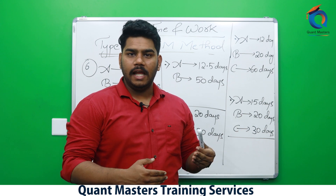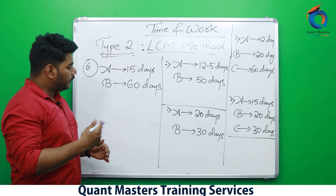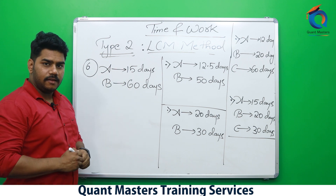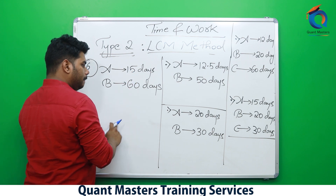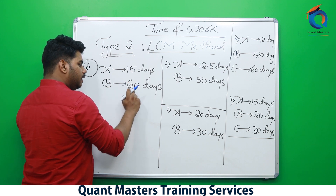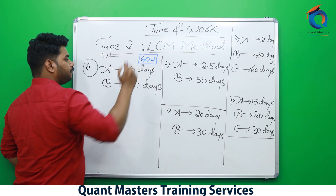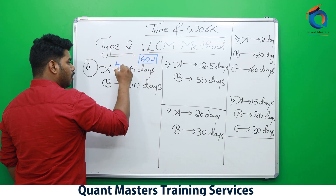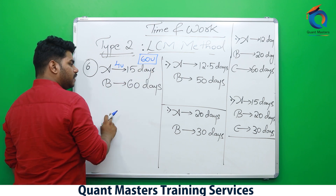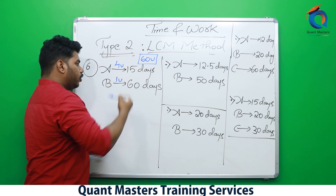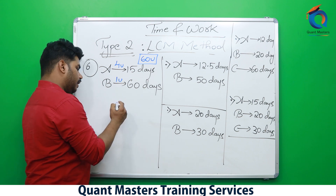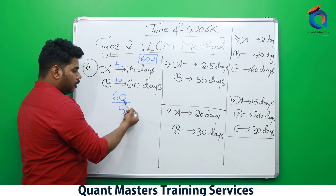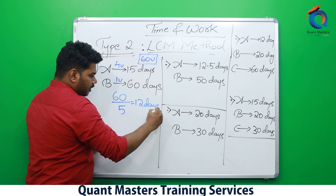Let's solve more problems using the LCM method. Question 6: A completes work in 15 days, B in 60 days. LCM of 15 and 60 is 60, so total work is 60 units. A does 60/15 = 4 units per day, B does 1 unit per day. Together they do 5 units per day. To complete 60 units: 60/5 = 12 days.